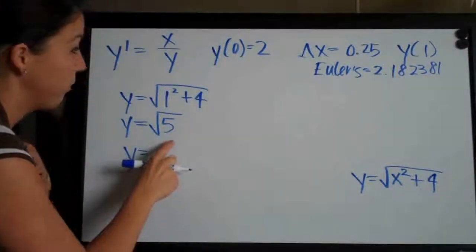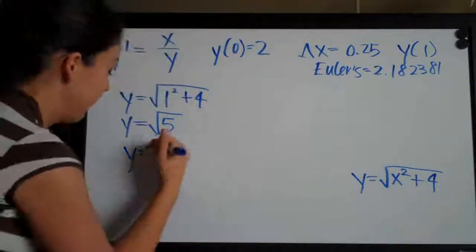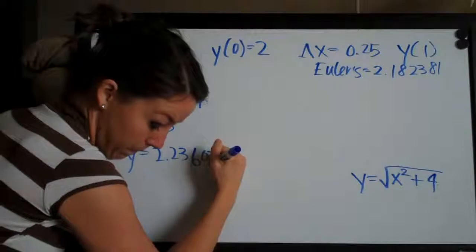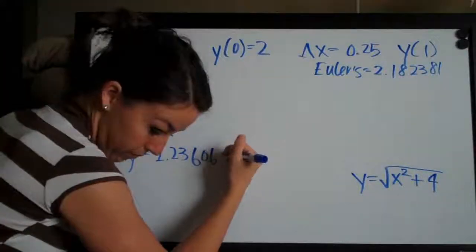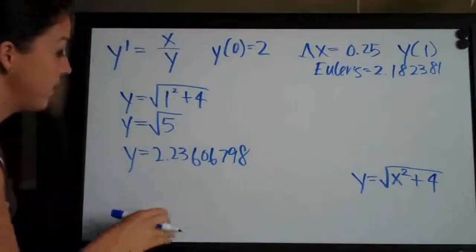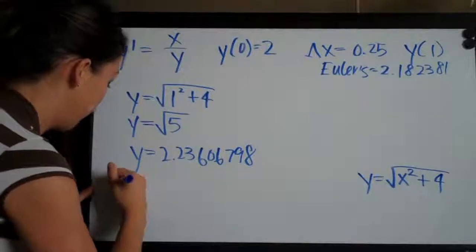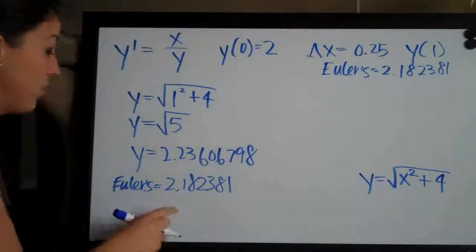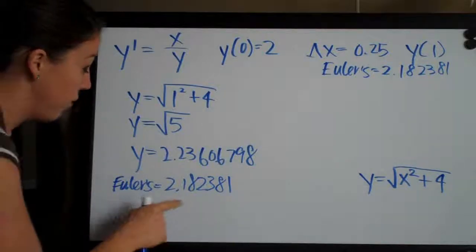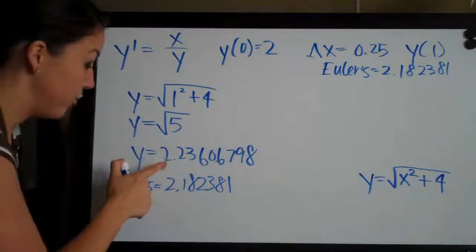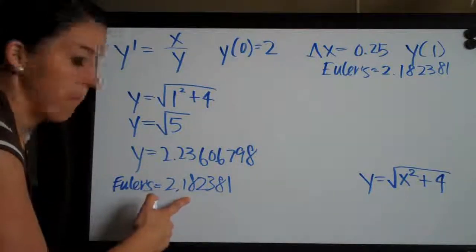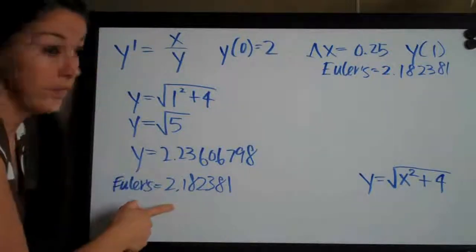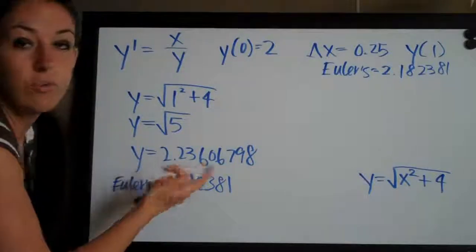So when we take the square root of five on our calculator, the answer that we get is 2.23606798. And Euler's method gave us 2.182381. So you can see here, Euler's method was an approximation, 2.18. This here, y(1) is the actual value at 2.236. So you can see they're off by about 0.05. So the Euler's method approximation gets us fairly close but is still off considerably, noticeably from the actual value which is this 2.24 or so rounded.